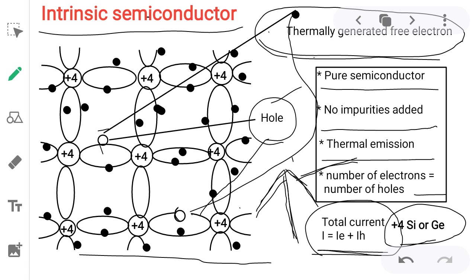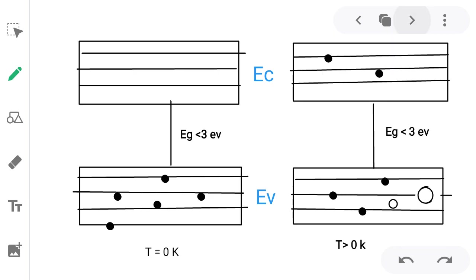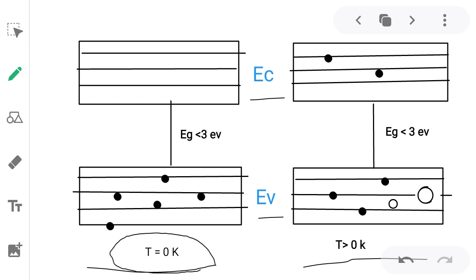Intrinsic semiconductor definition: it is the purest form of the semiconductor. No impurity is added. Conductivity is only due to thermal emission. Number of electrons equals number of holes. On the basis of energy level — conduction band and valence band — at 0 Kelvin, we already discussed in the temperature dependence of the semiconductor.